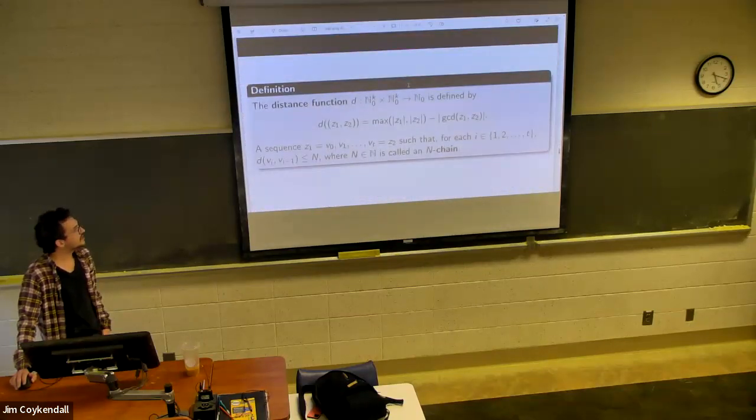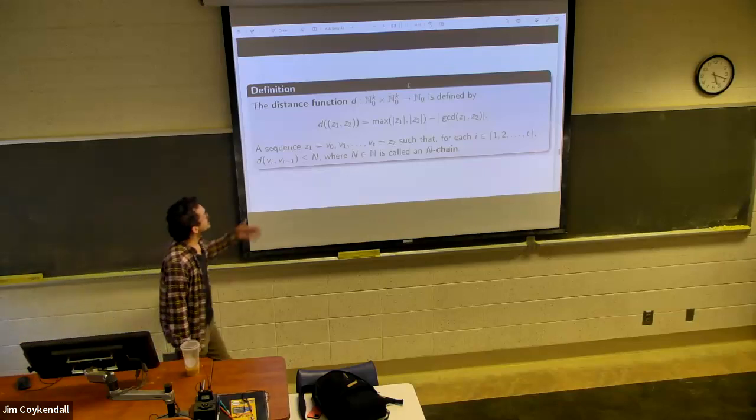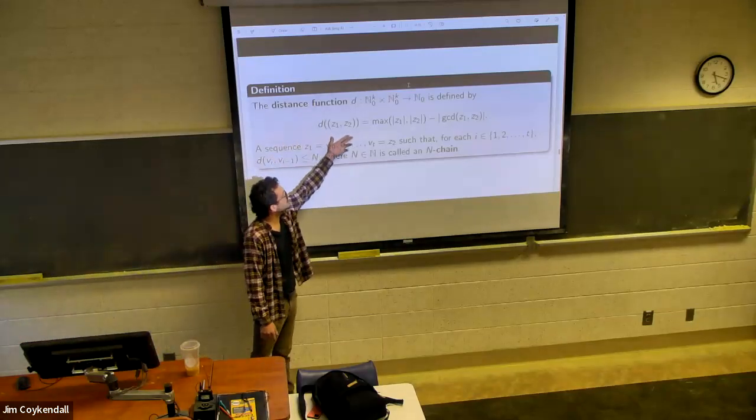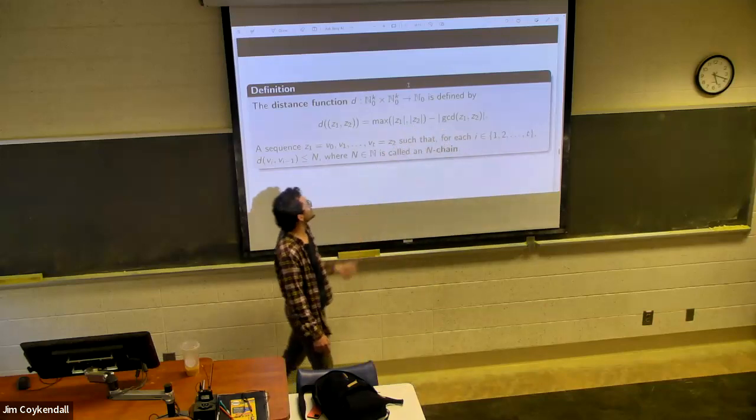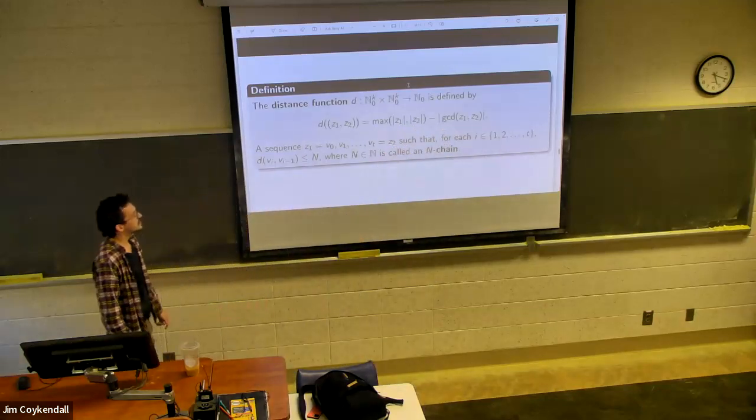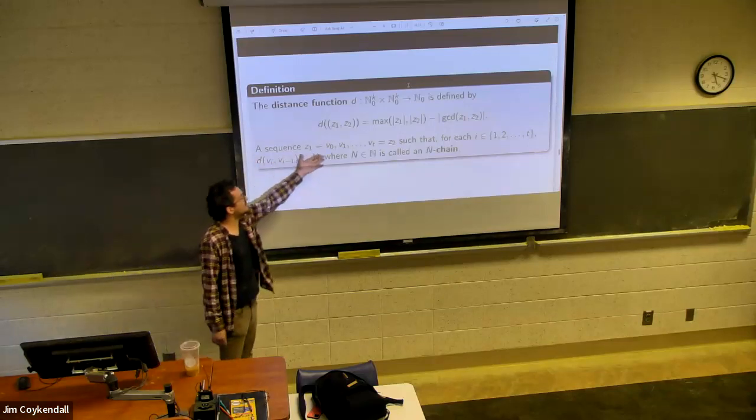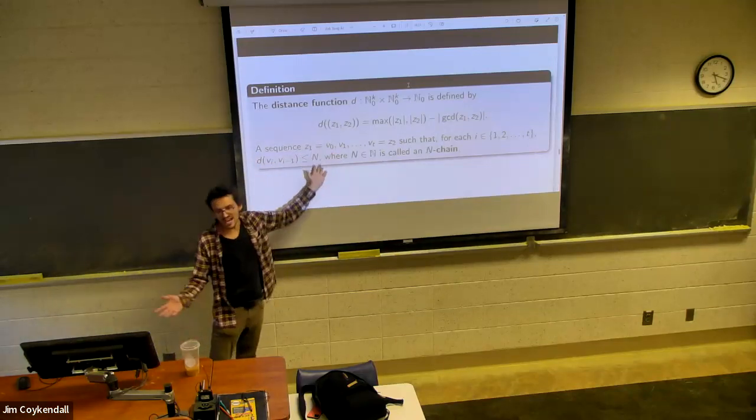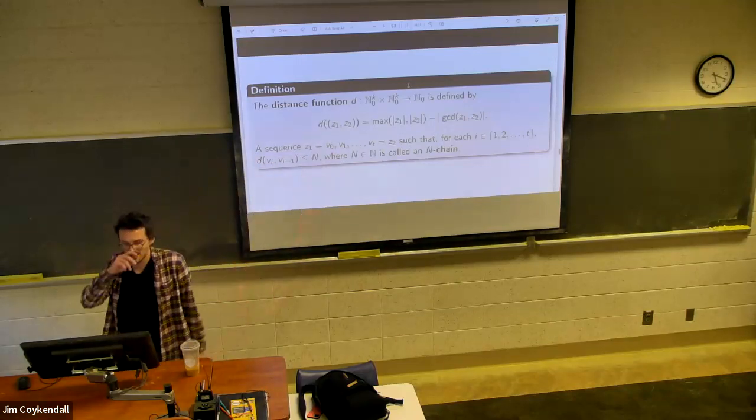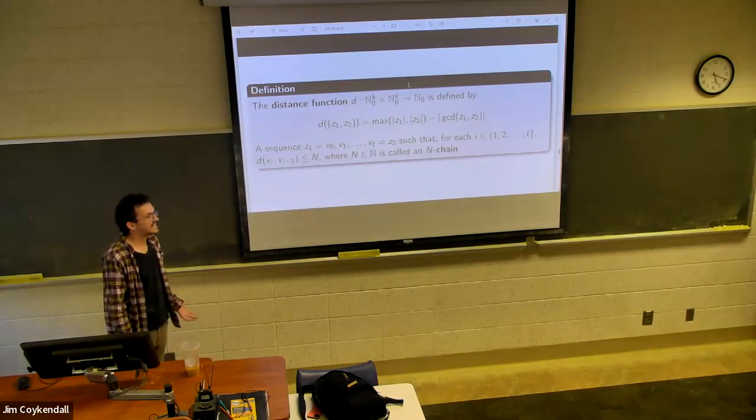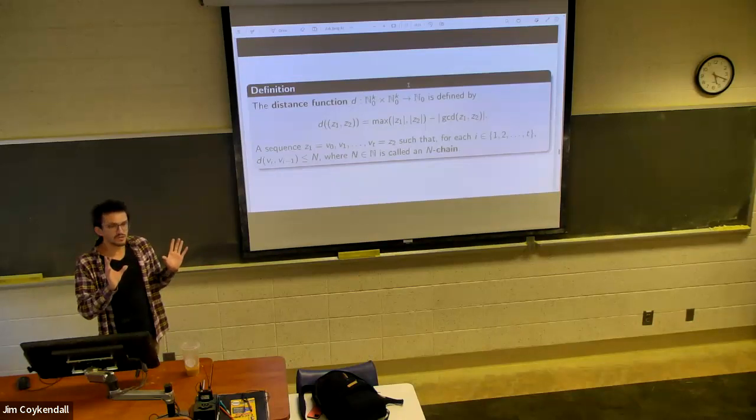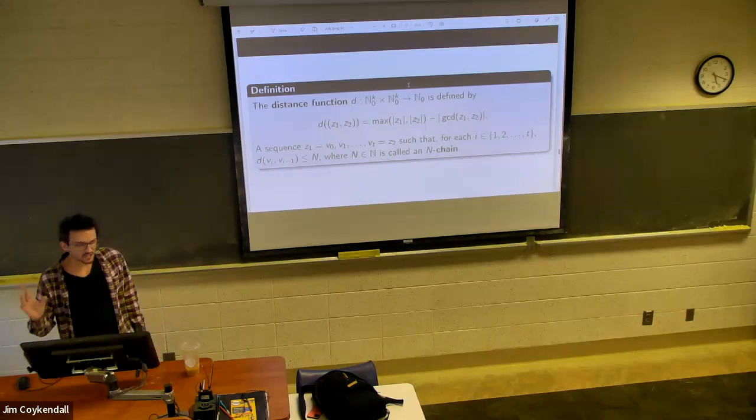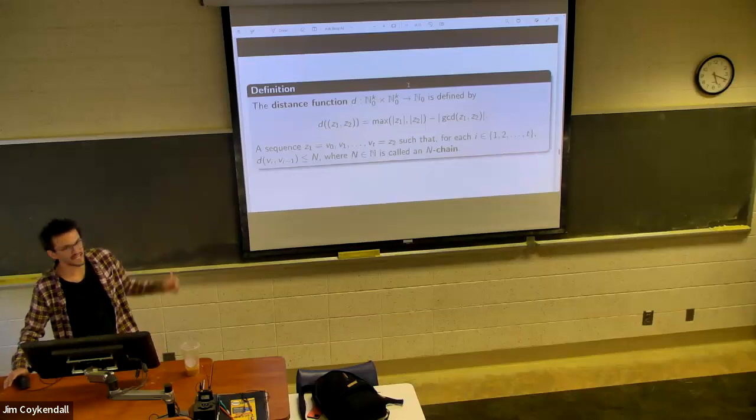Then we have the distance function, which takes two factorizations, and it says, okay, take the one that's got the greater of the lengths, and you're going to subtract it by the length of the GCD. A chain, really a chain is just take a collection of factorizations, you can call it a chain. An n chain is just saying, all right, no distance. The distance between any two of the factorizations does not exceed n.